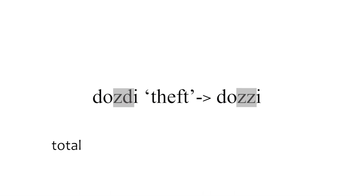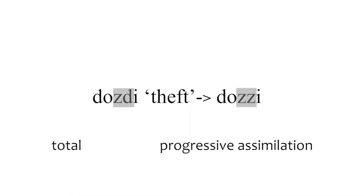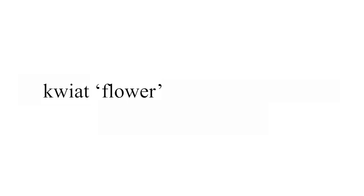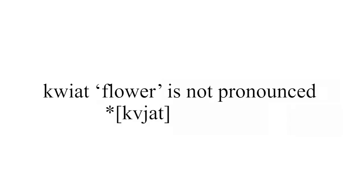So that's total contiguous progressive assimilation. Now for another example of progressive assimilation from Polish. The word for 'flower' in Polish is written 'kwiat', where 'w' is pronounced 'v' — more like German than English. It's supposed to be pronounced 'kviat', but it is actually pronounced 'kfiat'.